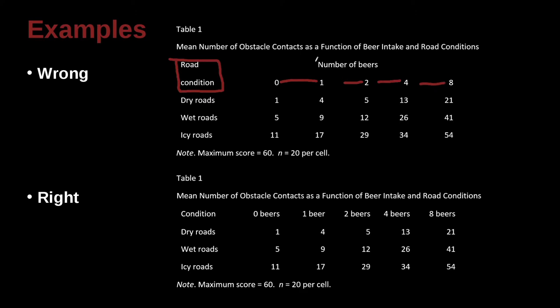But the problem here is that if this was the heading of a column, it should be telling us what's going down here. But actually that's not true because these numbers are not beers. These numbers are obstacles hit, a mean number of obstacles contacted. This is getting very confusing. So I think this user tried to put a heading on here to cover all of these numbers, but that didn't make much sense.